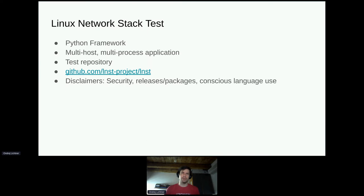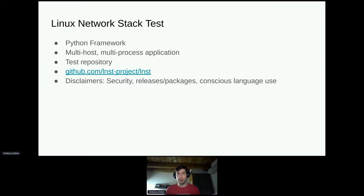Before getting into details, there are three main disclaimers. First, because we are doing network configuration, everything requires root permissions everywhere. Because we are distributing test code over the network, the project is basically a remote code execution security hazard — so don't run this on anything you care about. Second, RPM packages or a PyPI package for LNST exist but are very out of date, as a lot of what I'll be talking about is new implementation after extensive redesign.